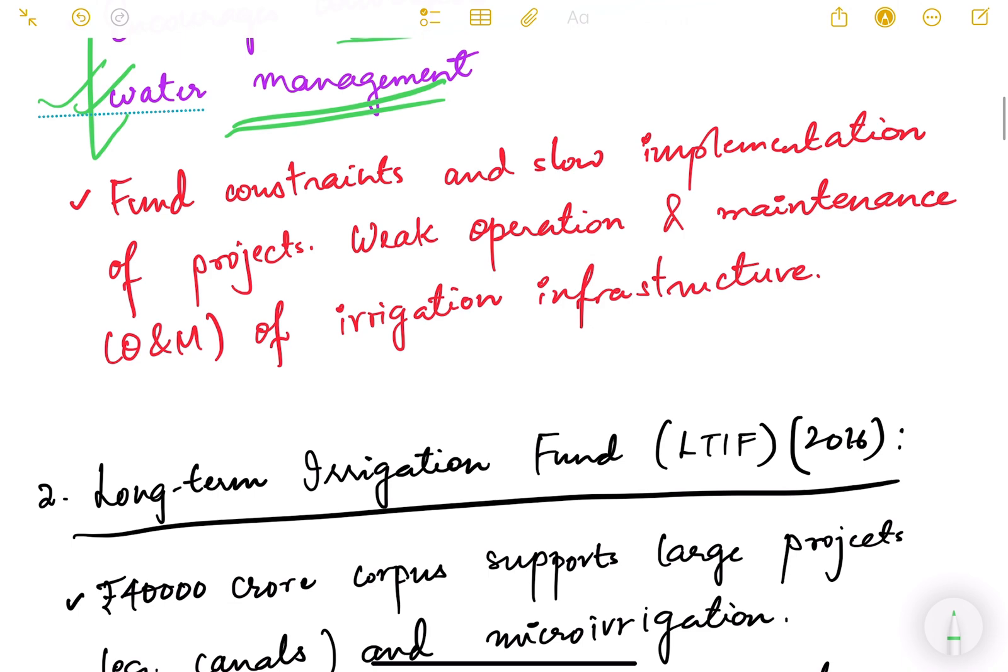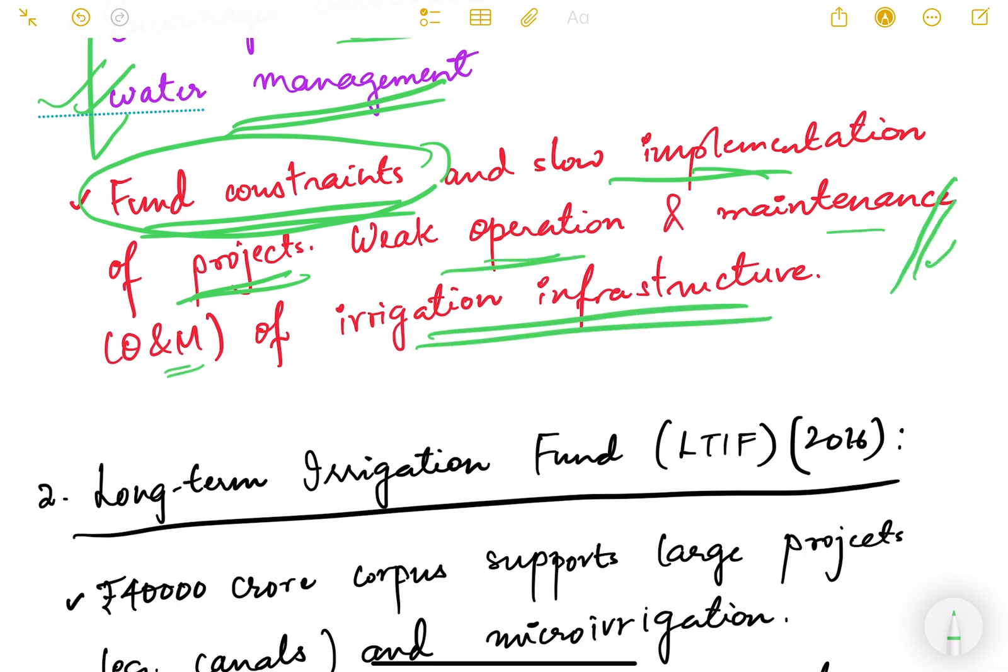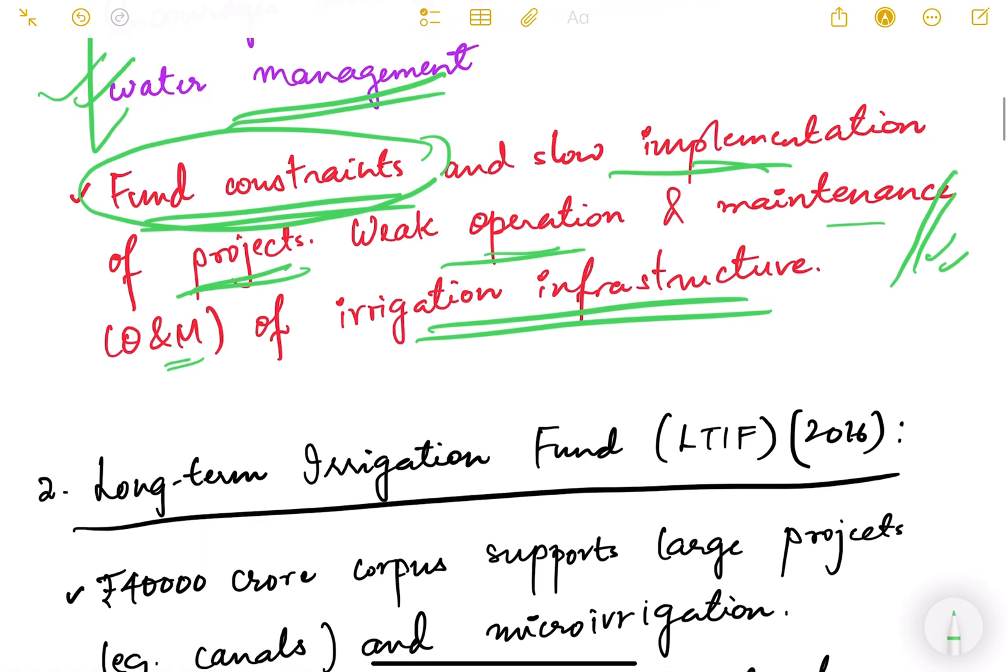However there are some drawbacks also of this scheme. There are fund constraints, slow implementation of projects. So although this is a very good scheme for providing irrigation to every farm and for promoting micro irrigation techniques, there are fund and budget constraints and implementation of projects is slow because of various reasons on the field. Weak operation and maintenance of irrigation infrastructure is another problem which is faced under this scheme.